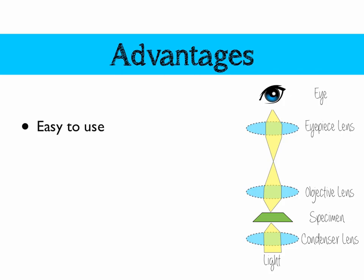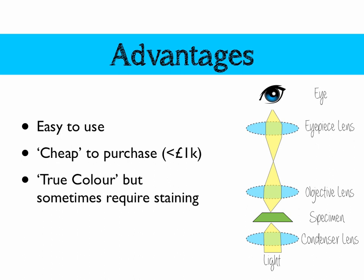The advantages of the light microscope: they're pretty easy to use — chances are you've used one yourself. They're really cheap to purchase, less than £1,000 for a half-decent one. They show true colour, meaning what you see is what you get as far as colouration. Sometimes we require staining to make samples easier to see. And the good thing is, especially with a dissection microscope, we can use live specimens, although we wouldn't be able to see inside cells.